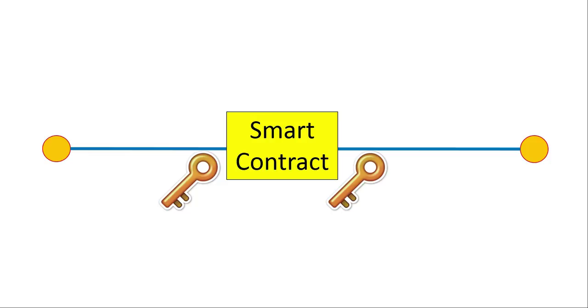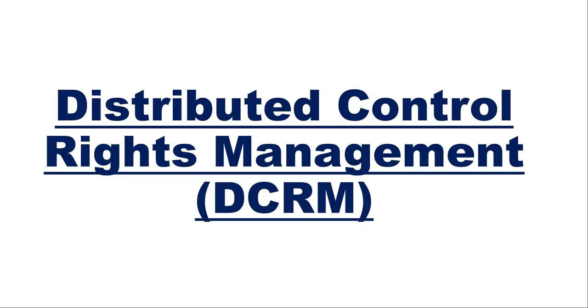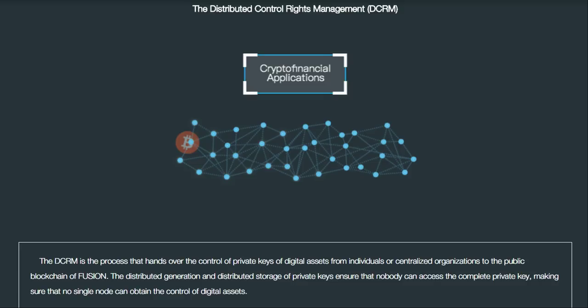There are three main features to the technology of Fusion. The first is known as Distributed Control Rights Management, or DCRM, and is probably their most controversial feature. Each wallet has a public key and a private key. Your public key is the address you give to other parties to send you money, so it's safe to share. Your private key, however, is like your password — it gives you full authority and full access to your account, including transferring money out of it as well as closing the account.